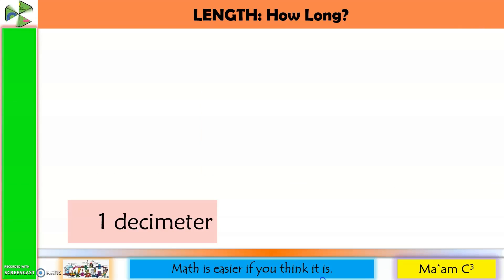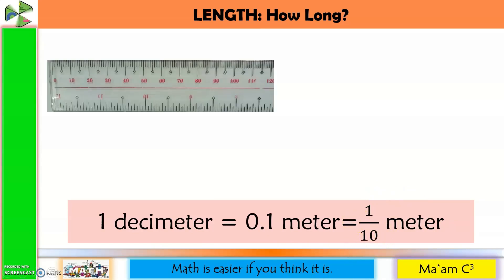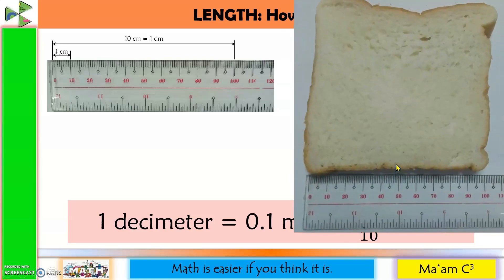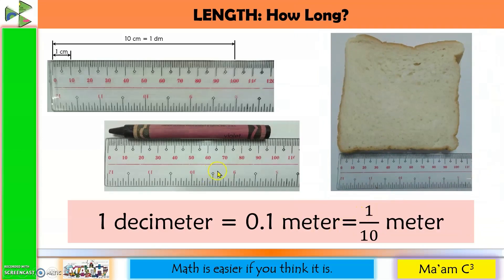Now let us talk about the smaller lengths. One decimeter equals 1 meter divided into 10 equal parts. From 0 to the 10-centimeter mark on a ruler is 1 decimeter. A side of a slice of tasty bread is about 1 decimeter long. The length of a crayon is a good estimate too — though a bit short, it can still be considered a good approximation for 1 decimeter.